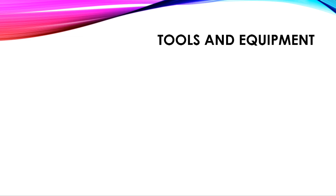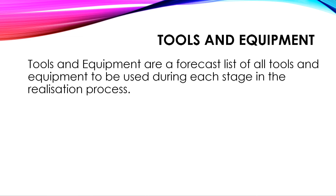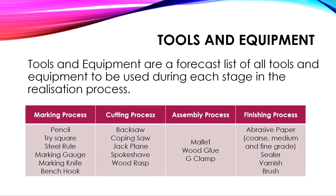Tools and equipment are a forecast list of all tools and equipment to be used during each stage in the realization process. For example, for the measuring and marking process we can use pencil, trisquare, steel rule, marking gauge, marking knife, and bench hook.